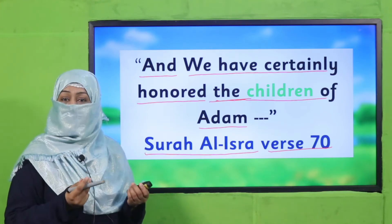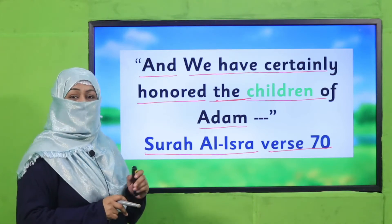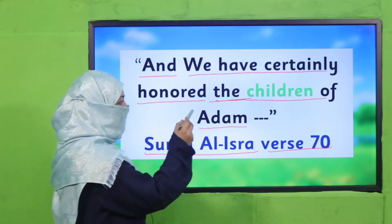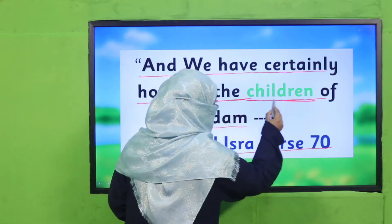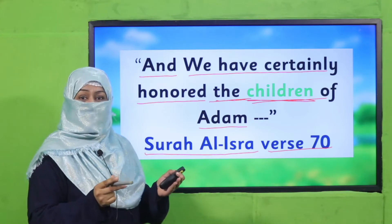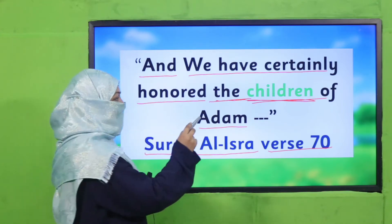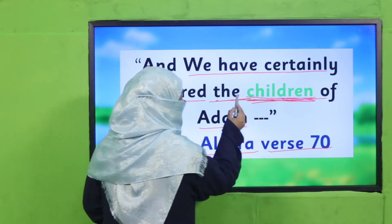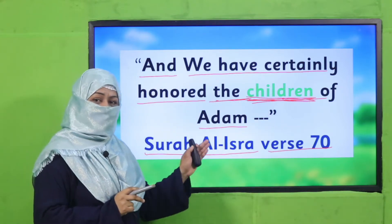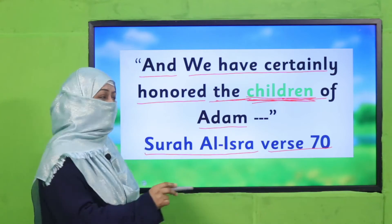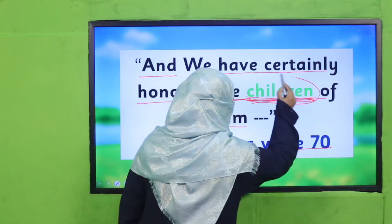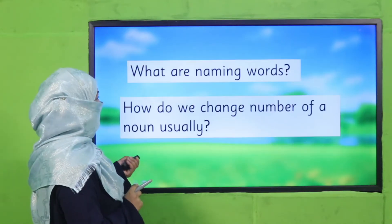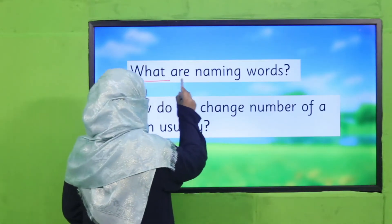Allah has given us many different skills which many creatures don't have. We can speak, we can think, we can follow Allah's commands, alhamdulillah. Now look at this word — 'children.' Children means more than one, and if it's one, we use 'child.' So this is how we have singular and plural. 'Children' is a plural noun, and we will learn many plural nouns today.